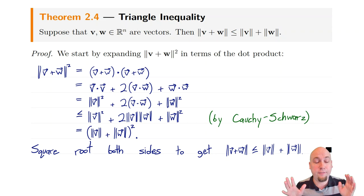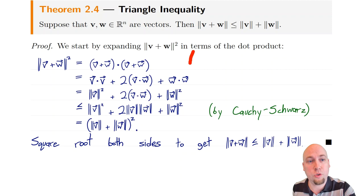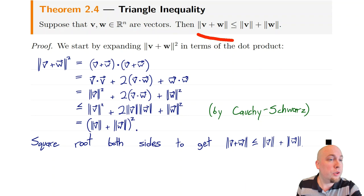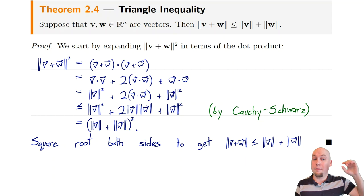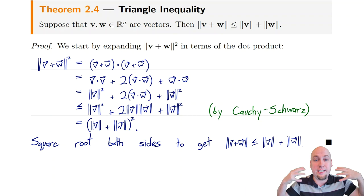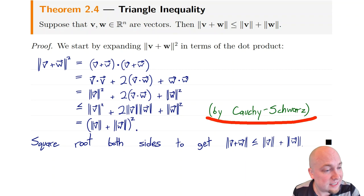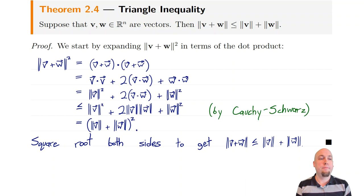That's our first application of the Cauchy-Schwarz inequality — it let us prove the triangle inequality. It's a worthwhile exercise to try to prove the triangle inequality directly from the definition, writing out the length of v plus w and the lengths of v and w and showing the inequality without Cauchy-Schwarz. You'll almost certainly get stuck — trying to prove it directly is extraordinarily hard. So Cauchy-Schwarz does the hard step for us.